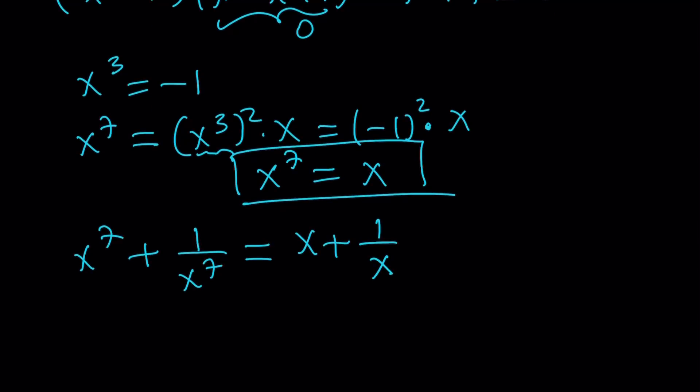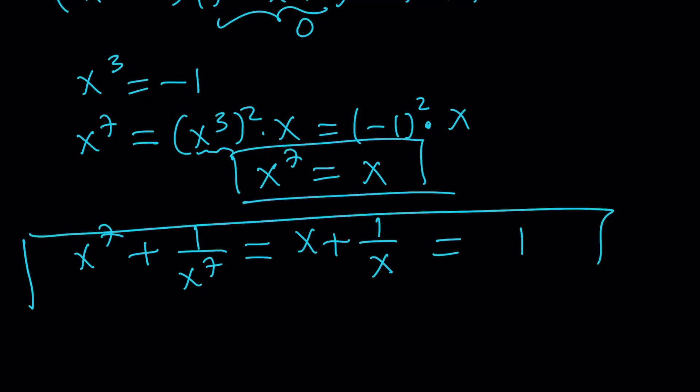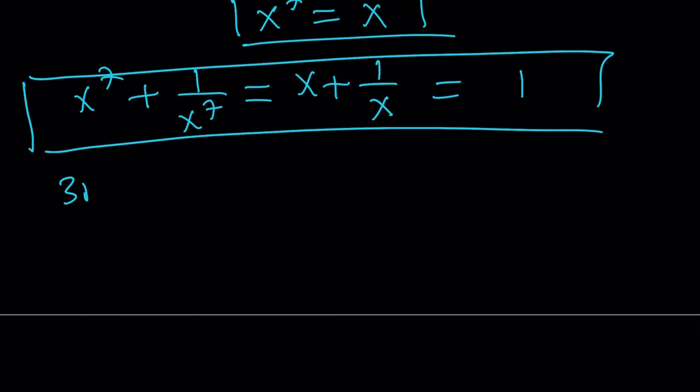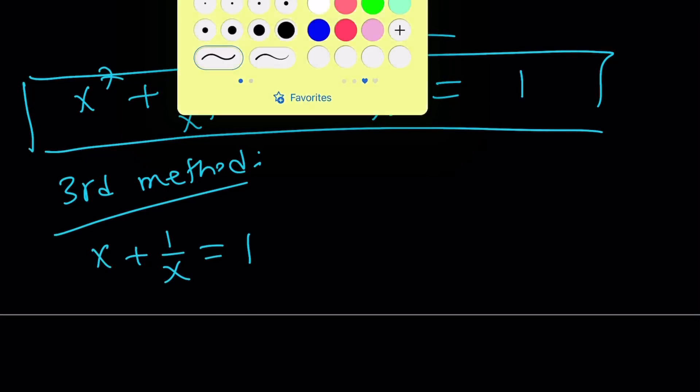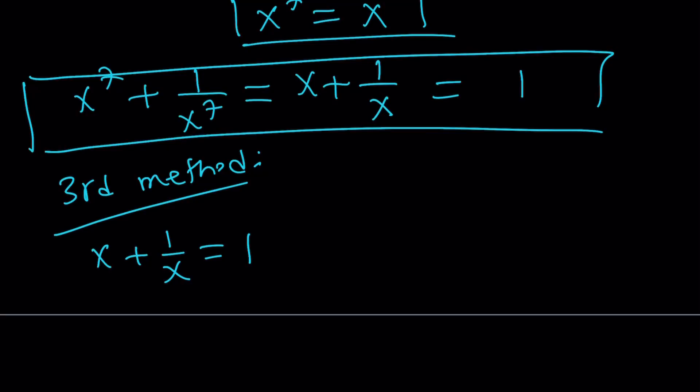Because now it allows you to write this x^7 + 1/x^7 as x + 1/x. Because x^7 is equal to x. Take a look at that. Isn't that beautiful? And we know that x + 1/x is equal to 1. Therefore, the answer is 1. And this brings us to the end of the second method and to the beginning of the third method. Let's go ahead and talk about the third method real quick so we don't make the video too long.